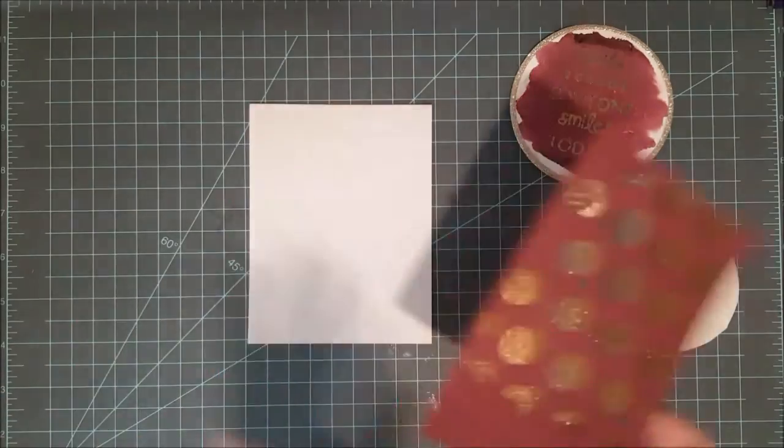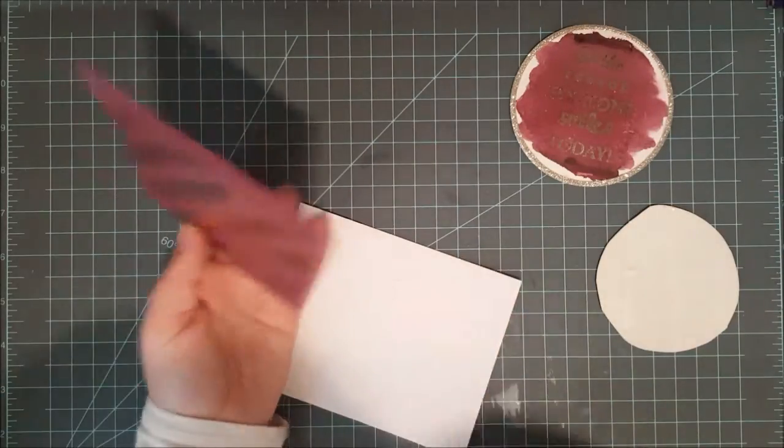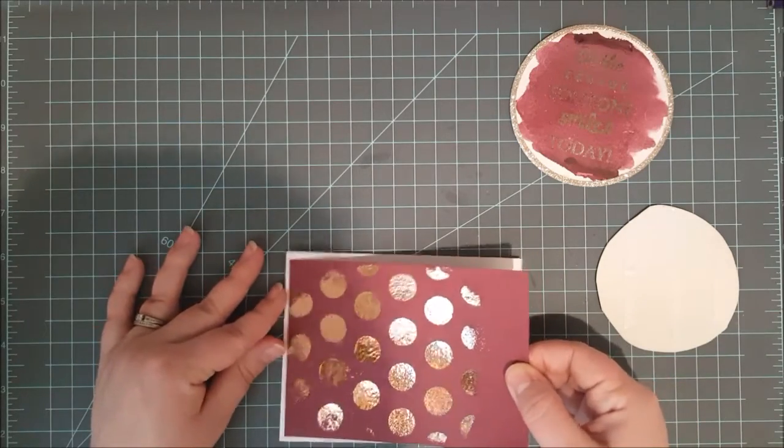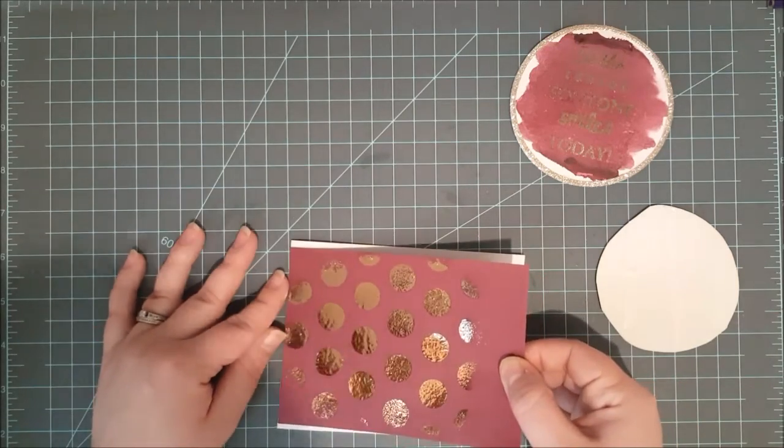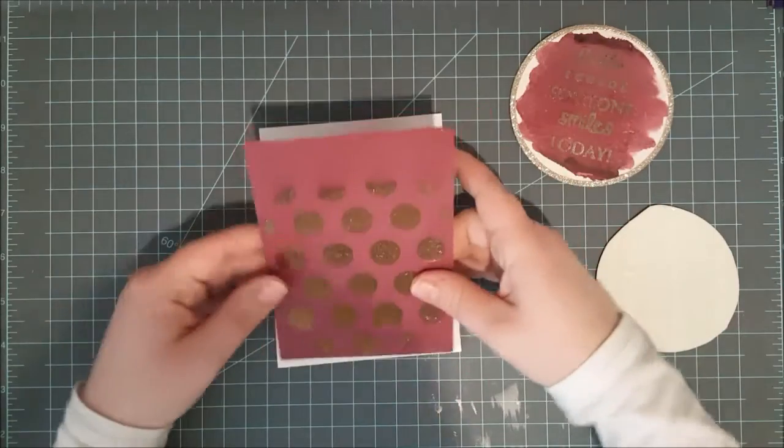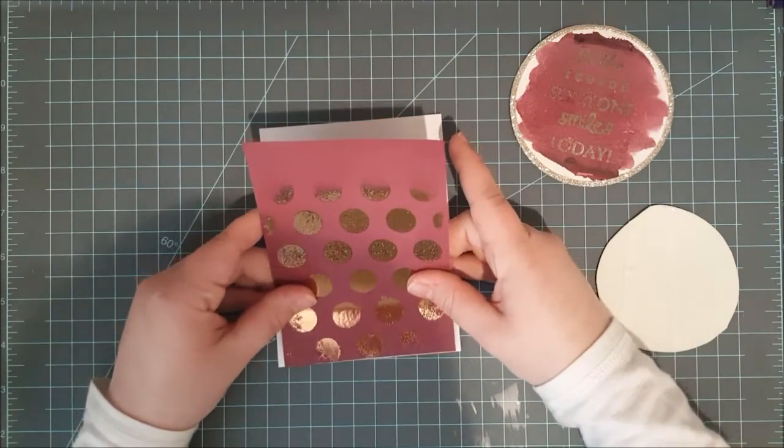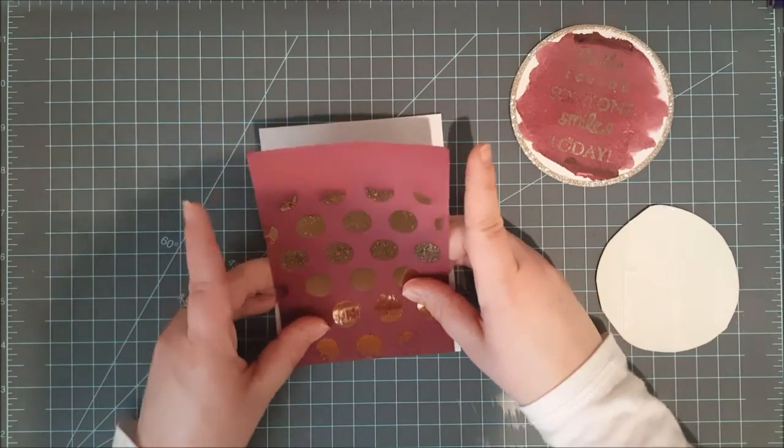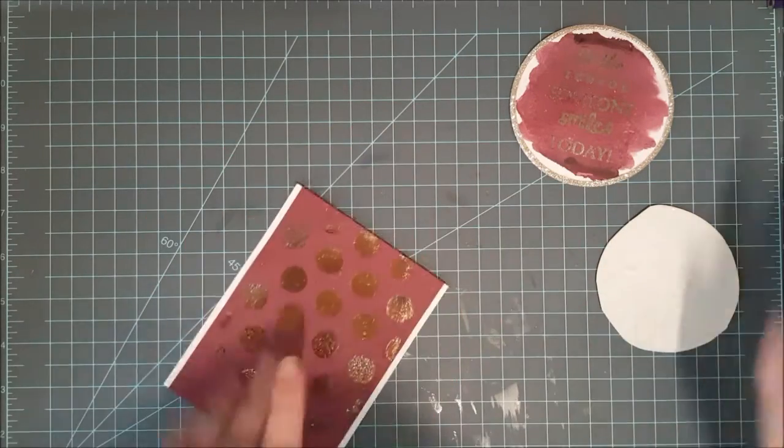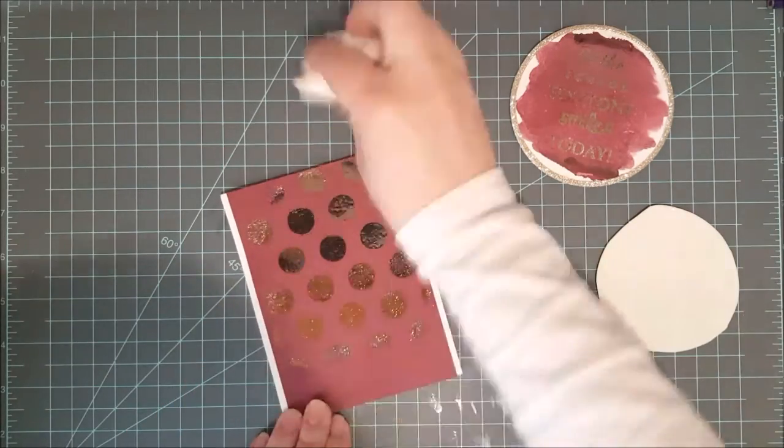I've got some double sided adhesive that I have put on the back of my circle background foil there and I will go ahead and stick that on to an A2 top folding card base that is white. I'll just line that up in the middle there and it is cut to 4 inches so it does have white peeking out on both sides. Just a little something different on this one.